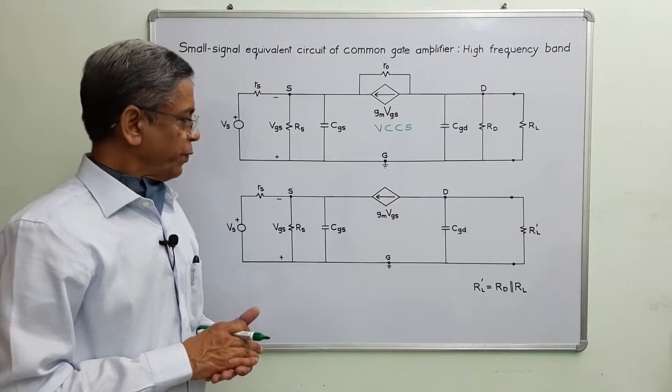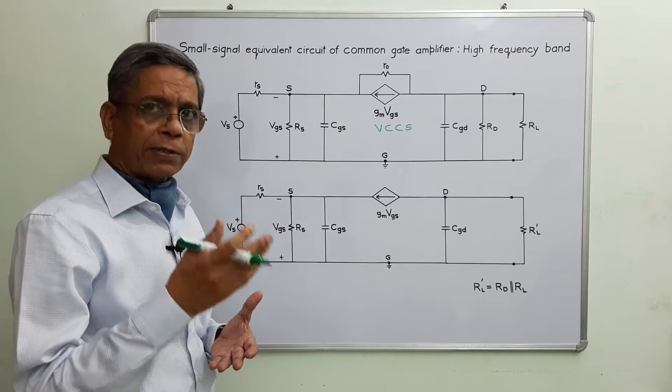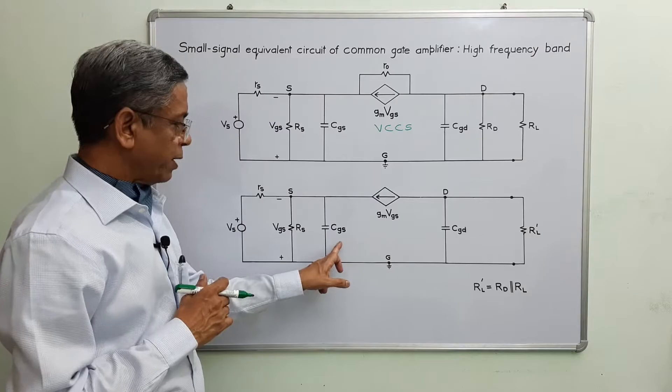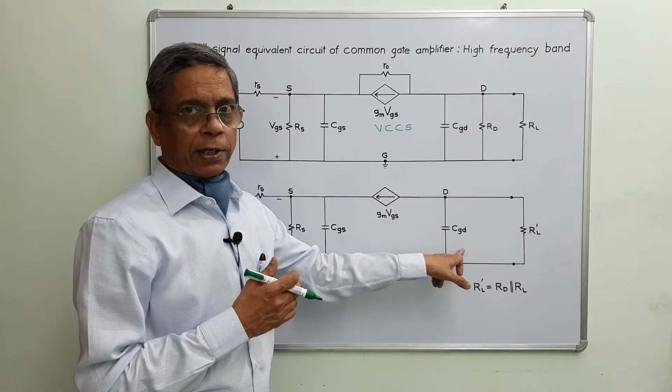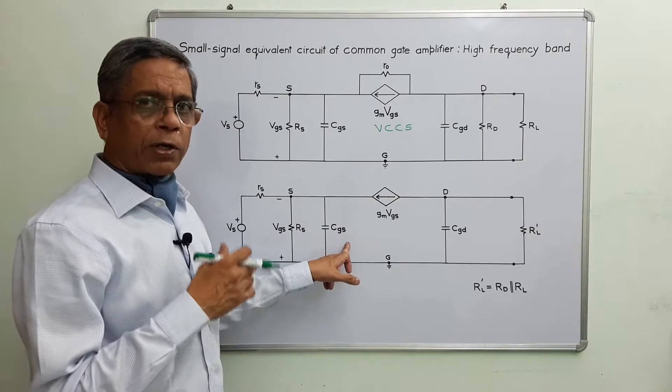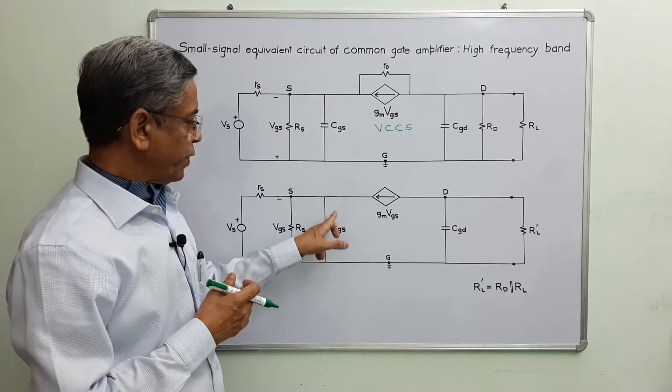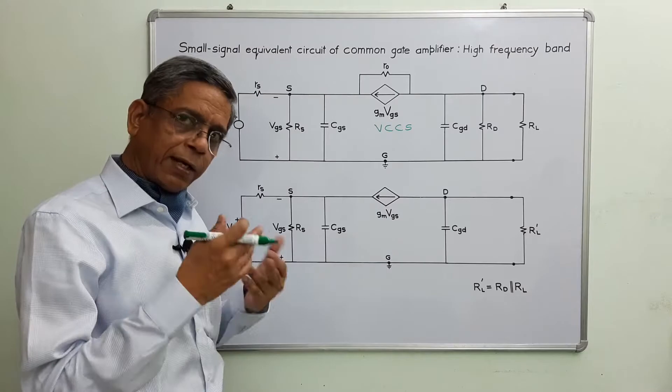There are two internal capacitors, so I will be using the open circuit time constant or zero value method for the determination of upper 3dB frequency. Since there are two capacitors, two steps will be involved. In the first step, I select CGS and consider CGD as open circuit by putting the value of CGD equal to zero. Then I determine the resistance seen by capacitor CGS — the Thevenin equivalent resistance across the terminals of CGS.